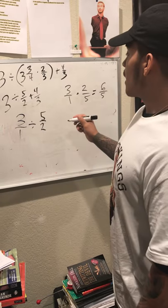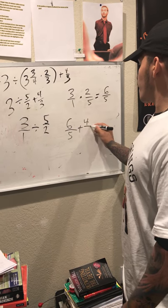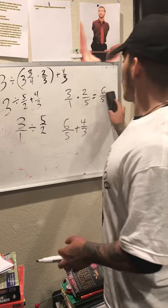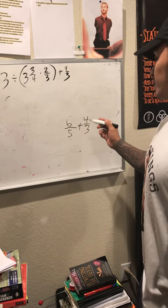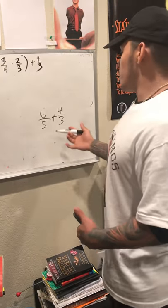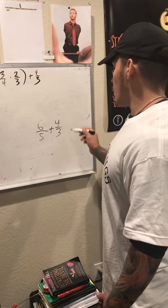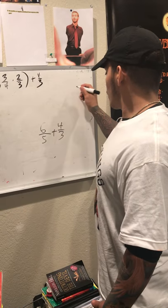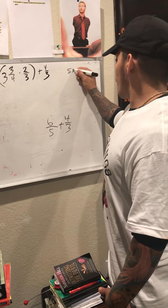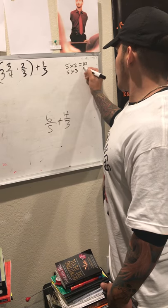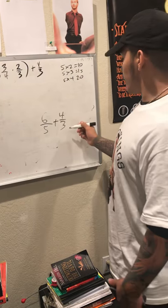Next we're gonna rewrite the problem where we left off: 6 over 5 plus 4 over 3. To add these we need to find a mutual common denominator, and to achieve that we're gonna find the least common multiple. For 5: 5 times 2 equals 10, 5 times 3 equals 15, 5 times 4 equals 20 — we'll stop right there.